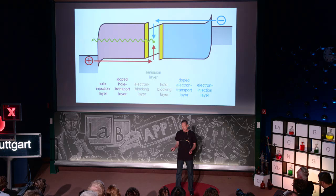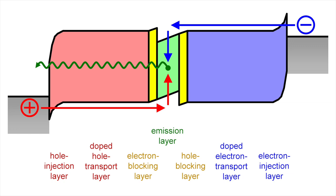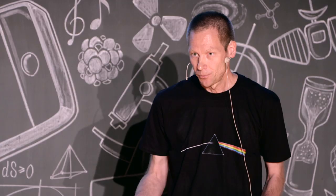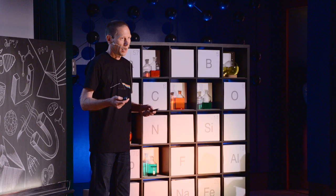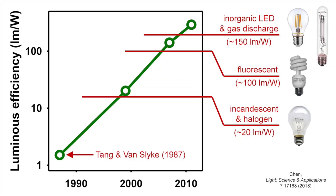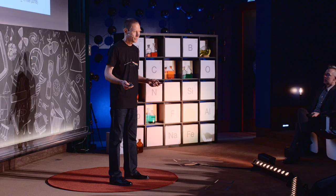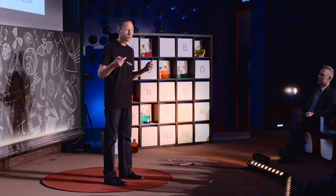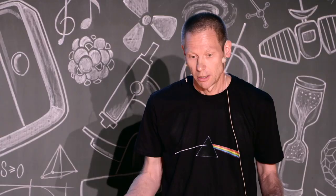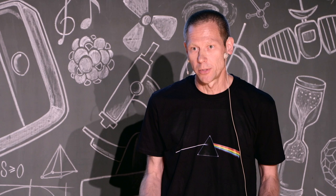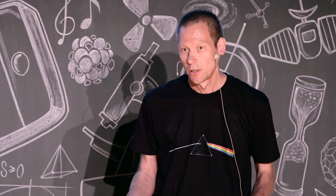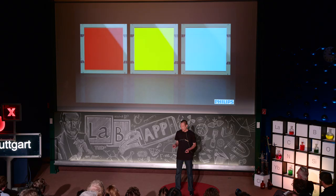Over the years, this deceptively simple device structure has been continuously improved and optimized, and modern-day organic light emitting diodes consist of as many as half a dozen or more organic layers, each serving a specific purpose and having a specific materials composition and layer thickness. As a result of all of this combined optimization, the efficiency — that is, the amount of electrical energy consumed by the device in order to generate light with a certain intensity — has improved dramatically, from only about one lumen per watt to several hundred lumens per watt, making state-of-the-art organic LEDs the most efficient man-made light source today.